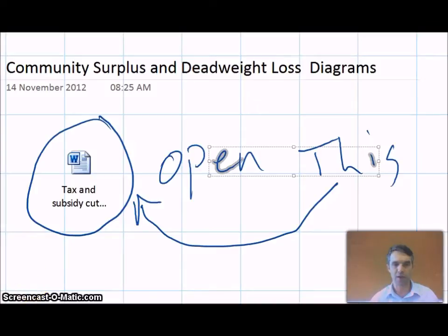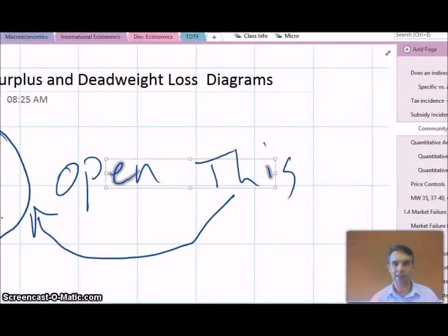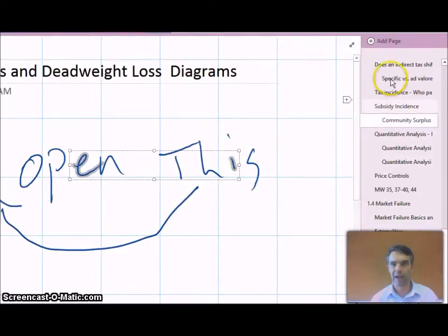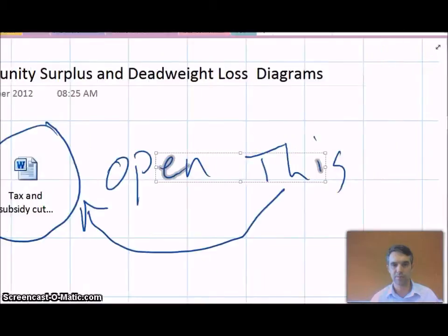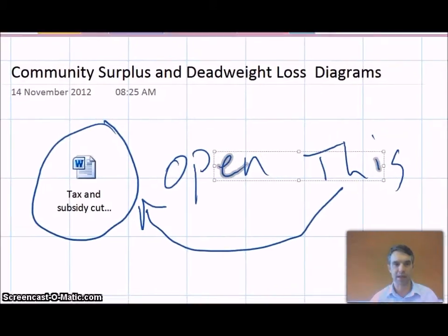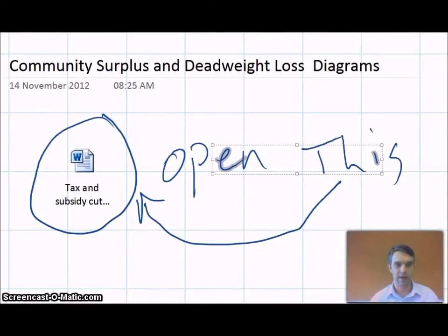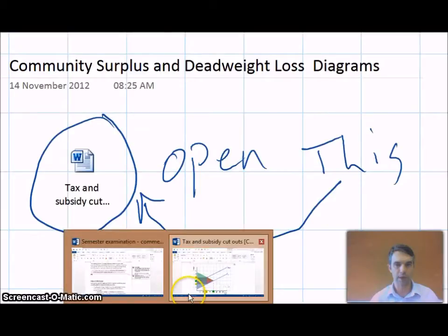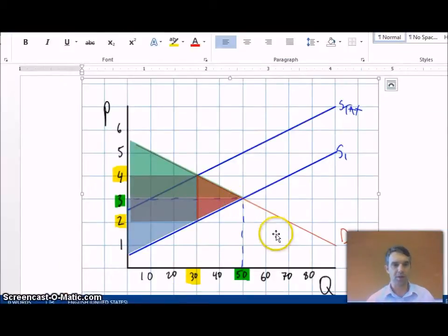So if you want, you can go play around with this as I do it. Where we're at is on the OneNote. About halfway down, it says community surplus and deadweight loss. And you should just double click that icon there and go ahead and open, and it should open up to what you're looking at here.